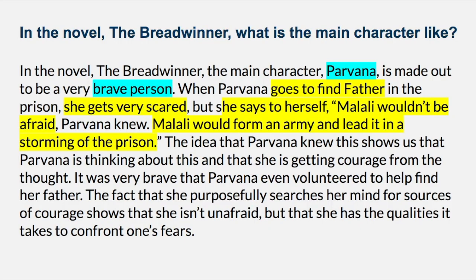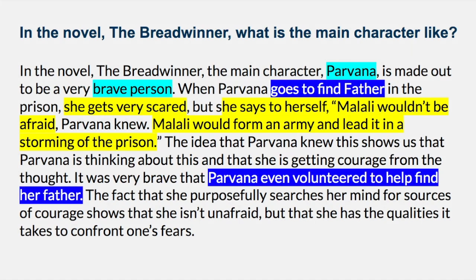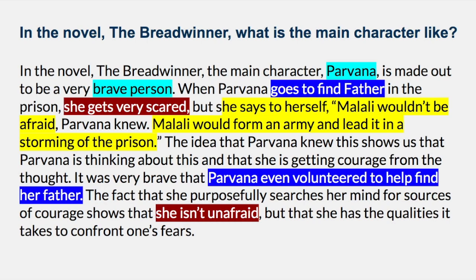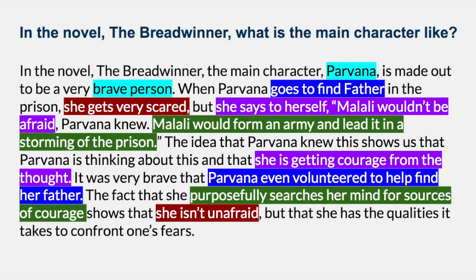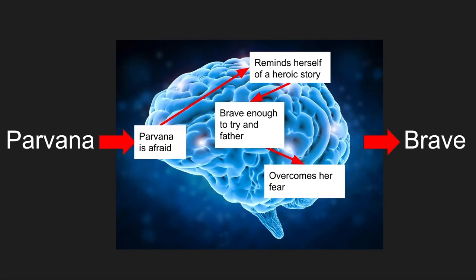Let's take a closer look at the connections between our evidence and our explanation. We highlighted all the parts of our evidence that we thought might be useful, and let's see how they show up in our explanation. We mentioned that Parvana goes to find father, and in our explanation we say Parvana even volunteered to help find her father. We identified that Parvana becomes afraid, and in our explanation we say she isn't unafraid. We identified that Parvana says Malali wouldn't be afraid, and we comment that Parvana is getting courage from the thought. Finally, we focused on Parvana thinking that Malali would form an army, and we commented that Parvana is purposefully searching her mind for sources of courage.